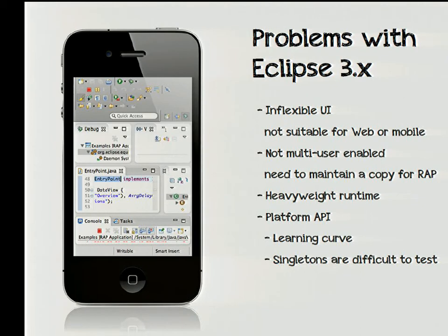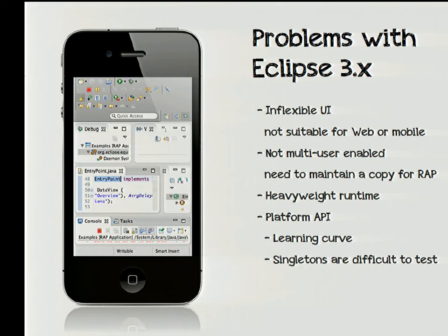With Eclipse 3.x it's very hard to change this UI model - there's a presentation API, but very few people manage to use it successfully. There's also the single-user issue: in a desktop IDE there's only one user, but on a server you have multiple users - every user has their own copy of the workbench. There are lots of singletons in Eclipse 3.x, and we had to maintain our own copy of the 3.x workbench and replace all these singletons with what we call session singletons. A singleton means there's a static reference to a value, so every user shares the same value - you cannot do this on a server. The memory footprint also adds up significantly when you have many parallel users.